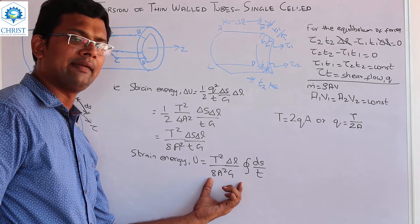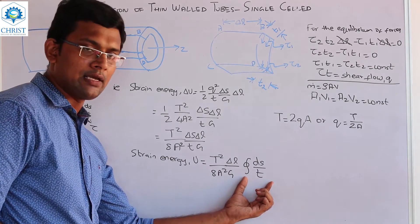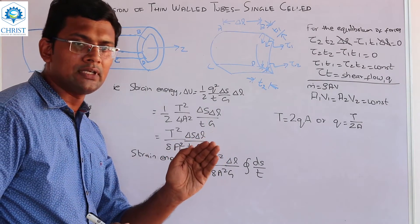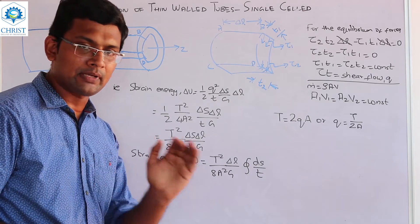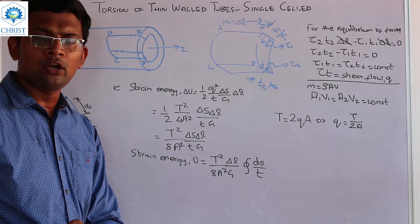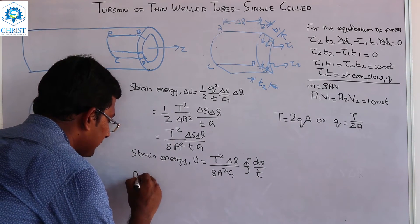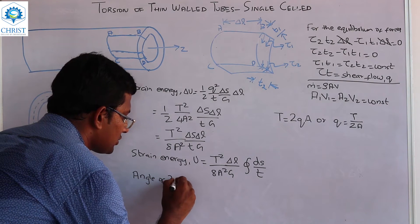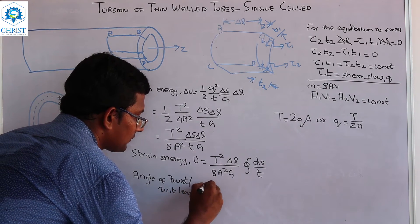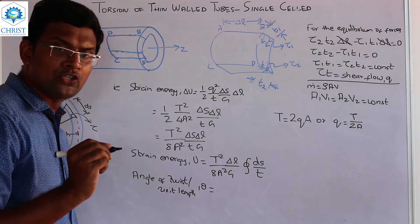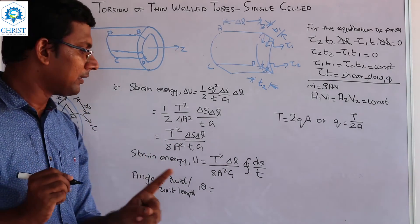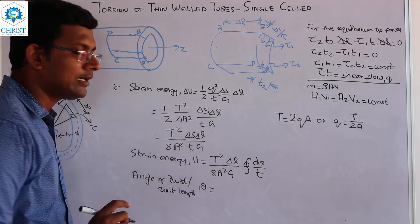Integrating ds by T — other terms are constants and these terms we integrate. The purpose is to solve the problem. We will apply the strain energy to find the angle of twist or angle of twist per unit length. So next is angle of twist per unit length theta. Setting delta L equal to 1.